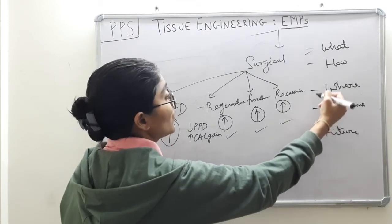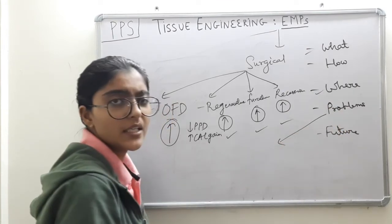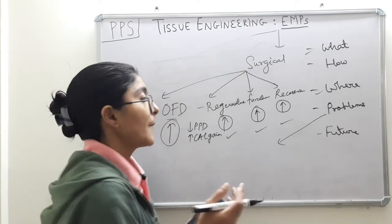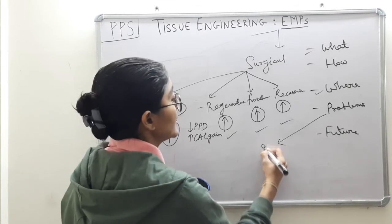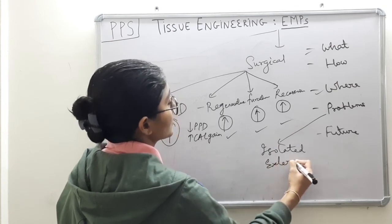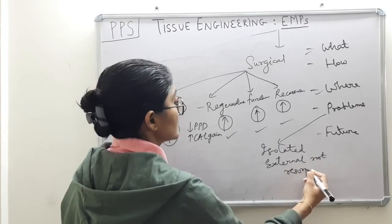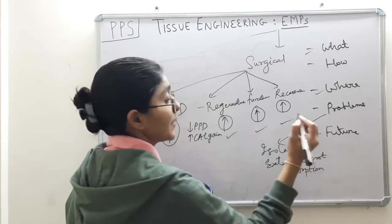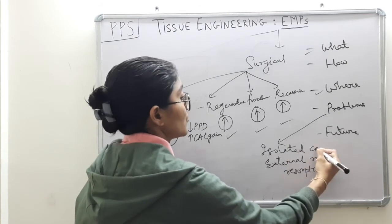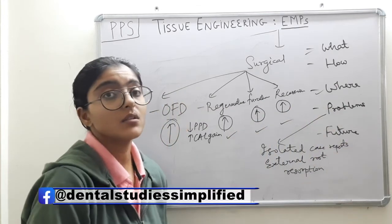Talking about problems — there are hardly any problems; the product appears to be totally safe to use with very low chances of post-operative pain and swelling. The only problem is isolated case reports of external root resorption. That is the only issue found with Emdogain or EMPs.